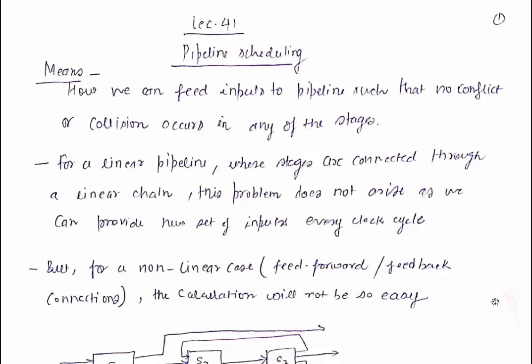Welcome back. In today's lecture we are going to discuss about pipeline scheduling. Pipeline scheduling means how we can feed inputs to the different stages of a pipeline so that conflict should not occur, or those inputs should not create a collision among the subsequent stages.